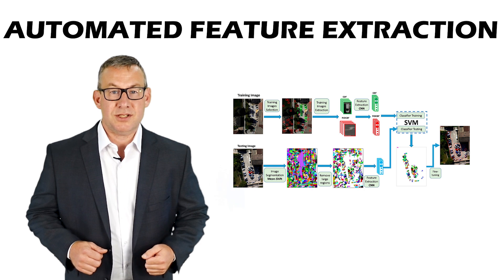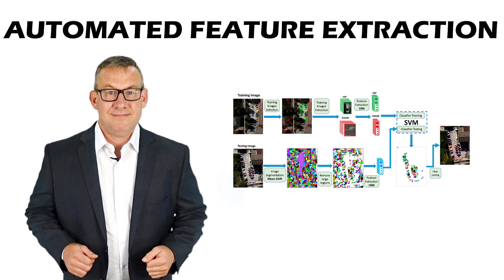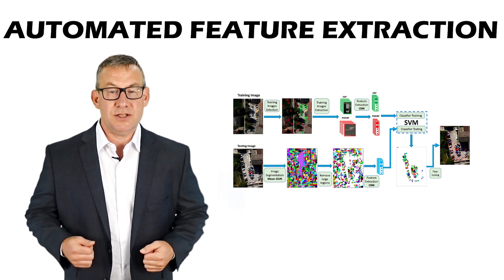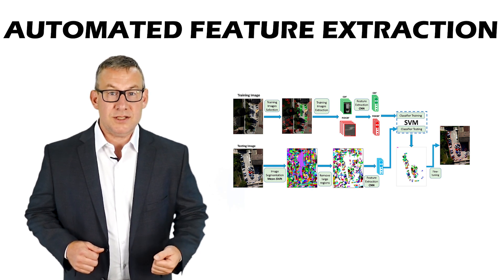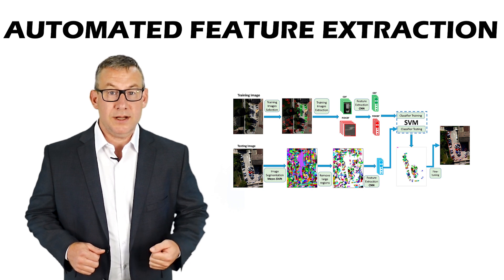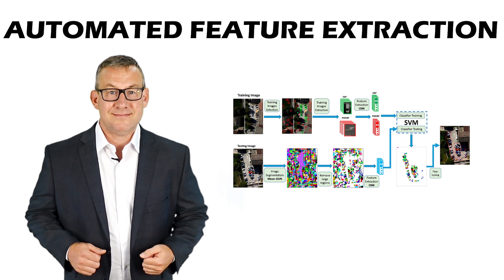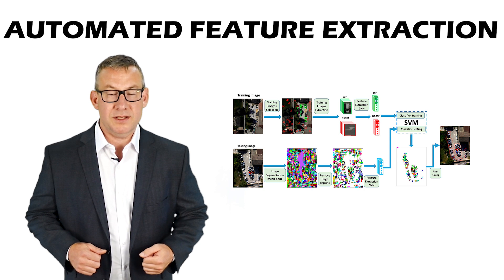In automated feature extraction, algorithms automatically detect and extract features. Automated feature extraction uses deep learning to recognize patterns and is faster than manual feature extraction.